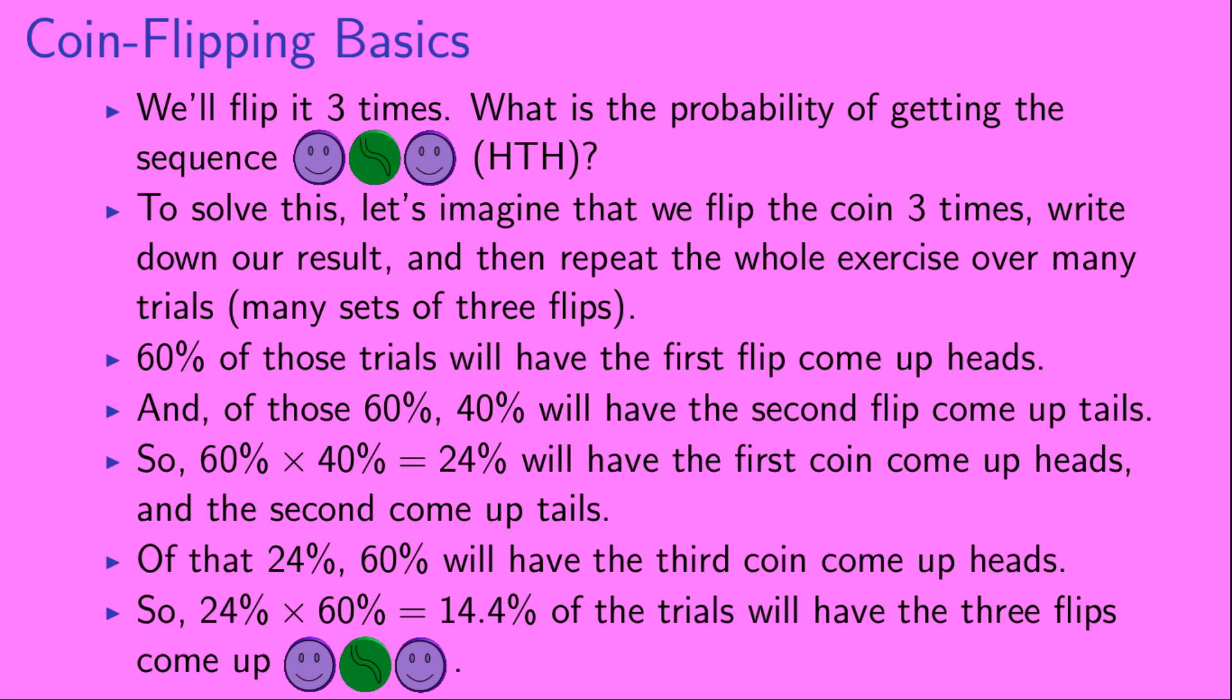Now in 60% of those trials, we will have the first flip come up heads, and of those 60%, 40% of them will have the second flip come up tails. So 60% times 40%, which equals 24%, will have the first coin come up heads and the second come up tails. Of that 24%, 60% will have the third coin come up heads. So 24% times 60% equals 14.4% of the trials will have the three flips come up heads, tails, heads.